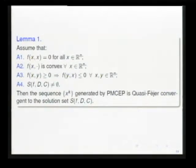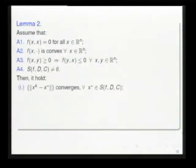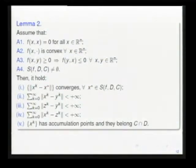The two consequences we obtain now: the boundedness of the sequence x^k is a direct consequence of the quasi-Fejer convergence, and the existence of accumulation points of the sequence. We obtain that the accumulation points belong to C intersect D without additional assumption.